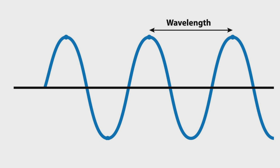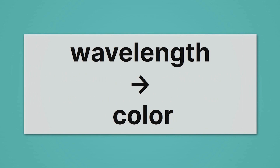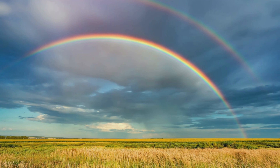What is the wavelength? It's the distance between two peaks. In this case, those peaks represent the strongest the electric field or magnetic field ever gets during that wave. So wavelength is the distance between two peaks of electric field strength or magnetic field strength. What does that determine in our observation of light? Wavelength turns out to determine color. So when we look at a rainbow with red, orange, yellow, green, blue, indigo, and violet, the difference between those different colors is the wavelength.